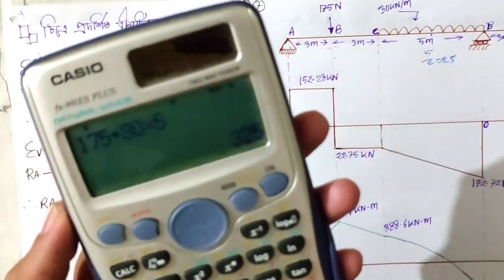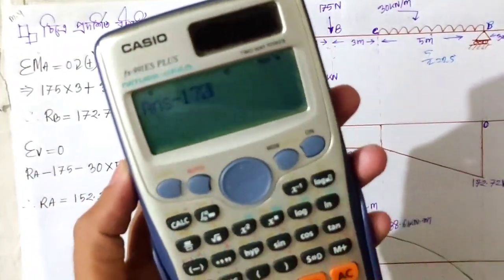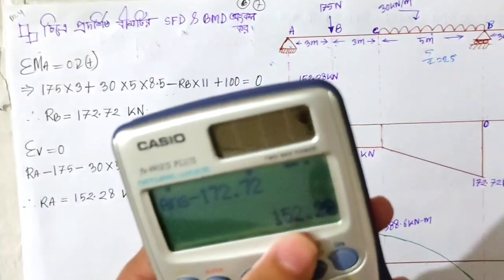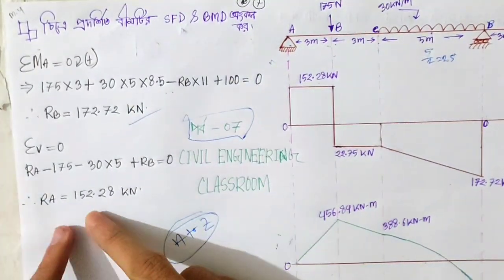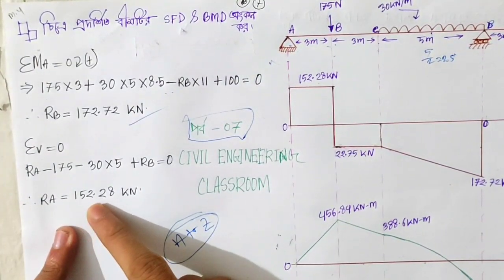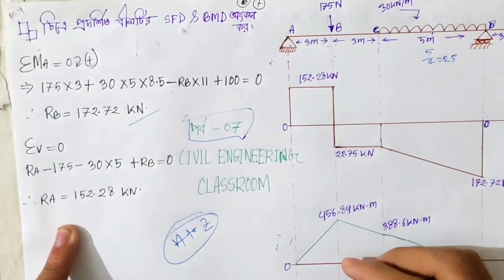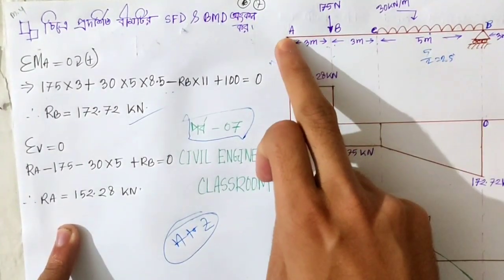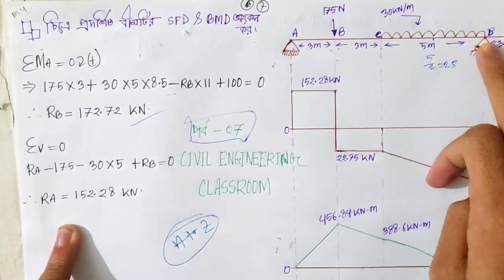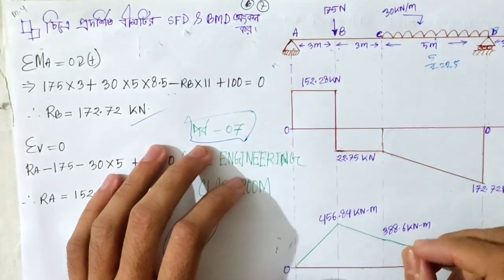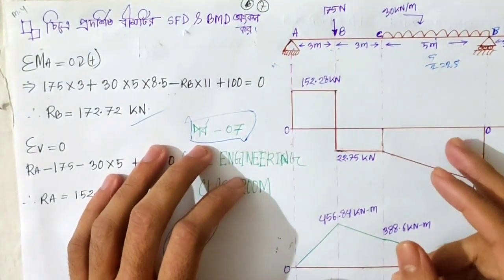So we have to write this: R_A is 122.28. Actually, we can put this on the x-axis system, so we can take this one and get the result.